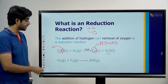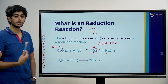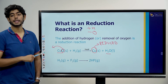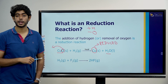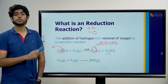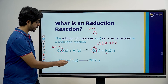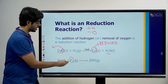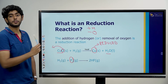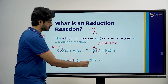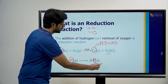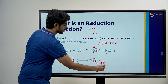Next example: H2 gas plus fluorine gas react to form hydrogen fluoride. Fluorine is being reduced because hydrogen is being added — addition of hydrogen, so 2HF, fluorine is being reduced.